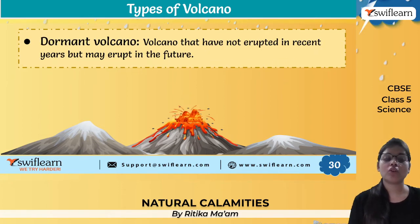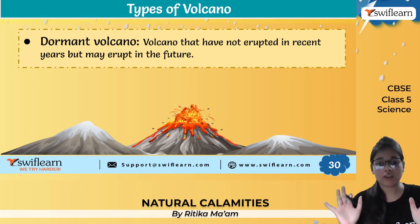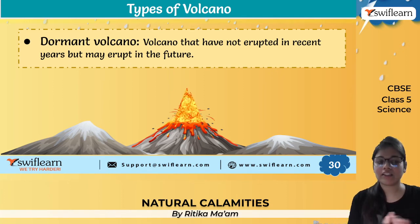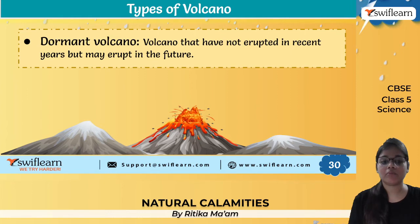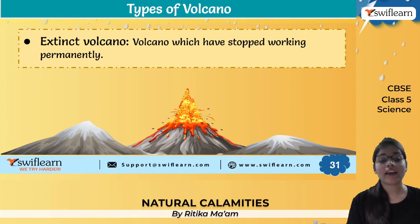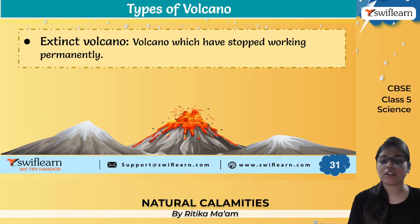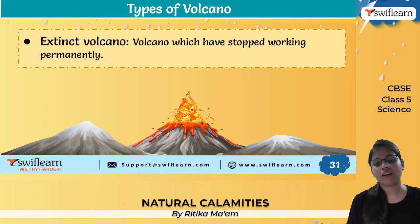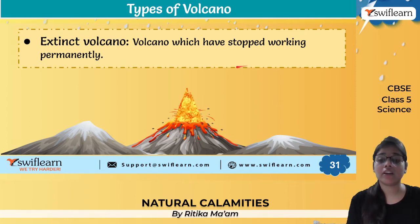A dormant volcano is like a sleeping volcano — it has not erupted in recent times but there is no certainty, because it can wake up and erupt at any time. An extinct volcano is essentially dead — these are volcanoes which have stopped working permanently and there is close to a 100% chance they will never erupt again.